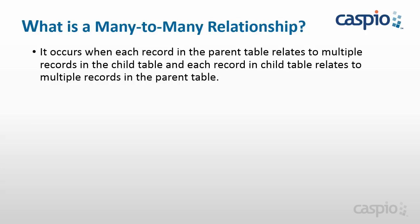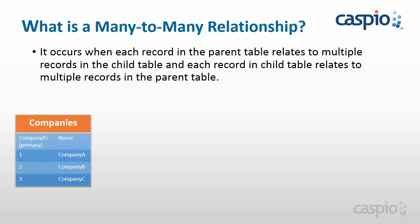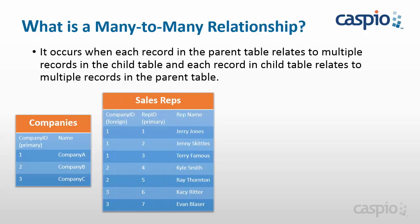Let's take a look at a quick illustration. Recall from the prior video — we had a table of companies and each company had a primary key, or a unique identifier. We also had a table for sales reps, and we identified using a one-to-many relationship which employee belongs to what company. Jerry, Jenny, and Terry have company ID number one as a foreign key, so they belong to company A. Kyle and Ray belong to company B, and Casey and Evan belong to company three. So so far we're looking at a one-to-many relationship.